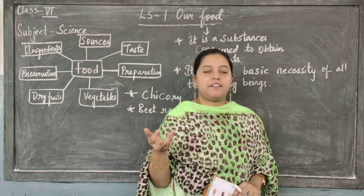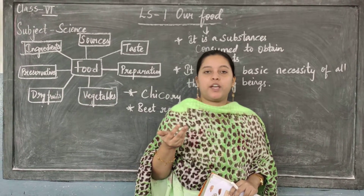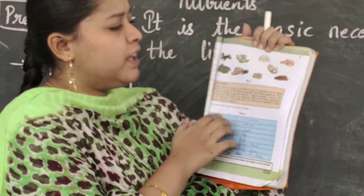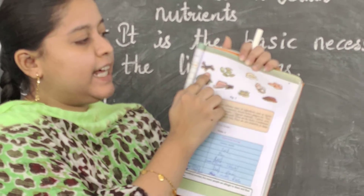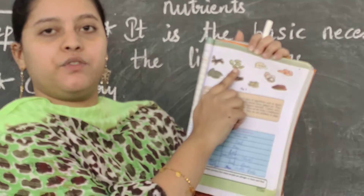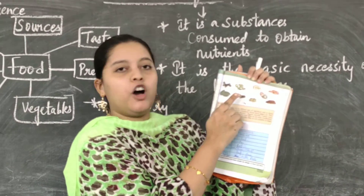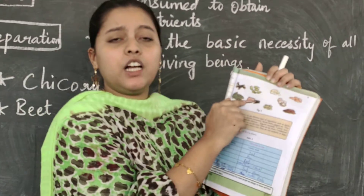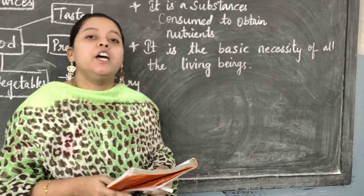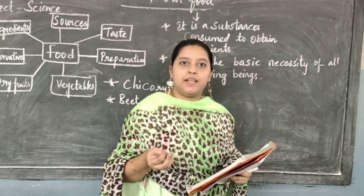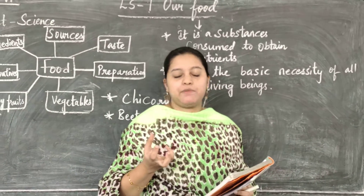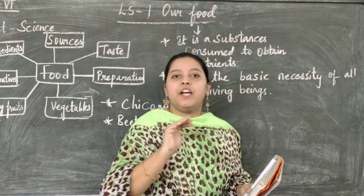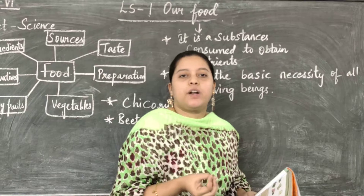Other condiments include bay leaves and pepper. In your textbook on page five, Figure 5, you can see cinnamon, cloves, and cardamom. Cardamom is called elaichi, cinnamon is called dalchini, and cloves are called laung. Apart from condiments, there are also dry fruits like cashew nuts, almonds, and dried grapes — which we call kishmish.